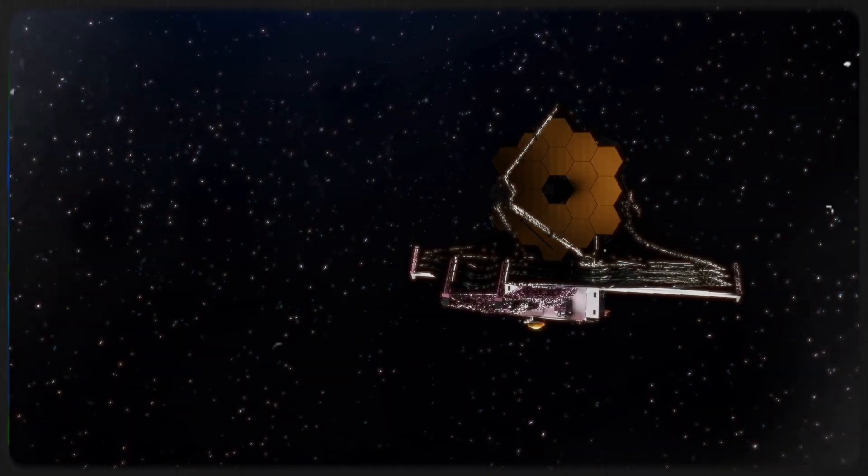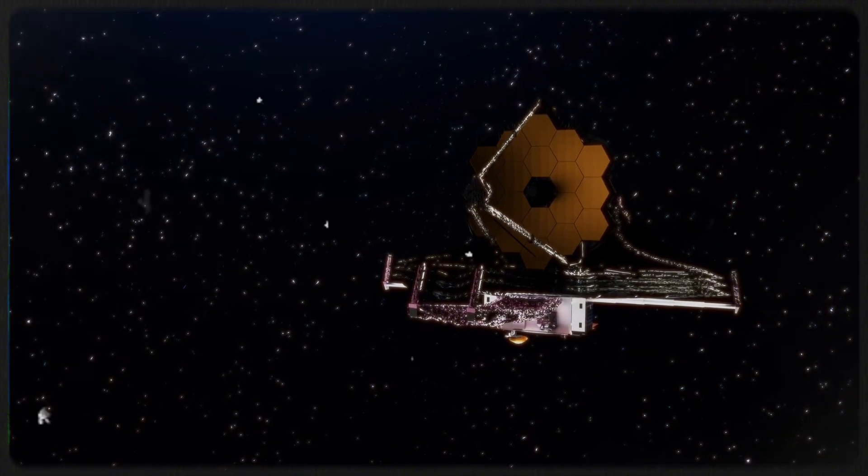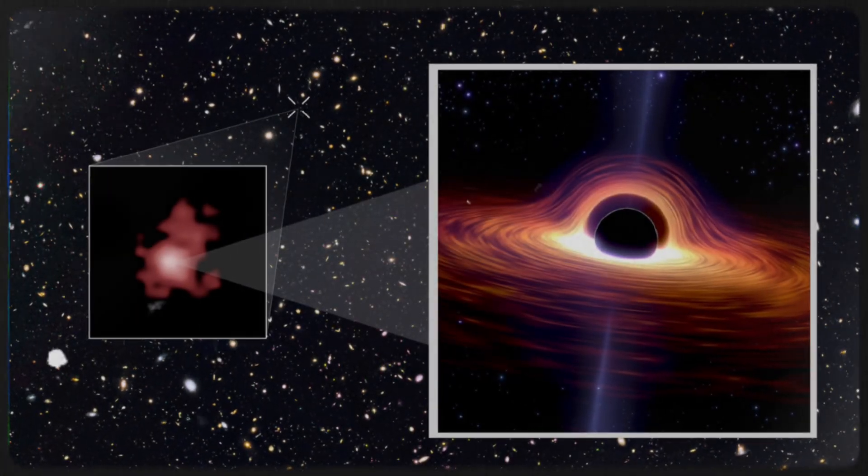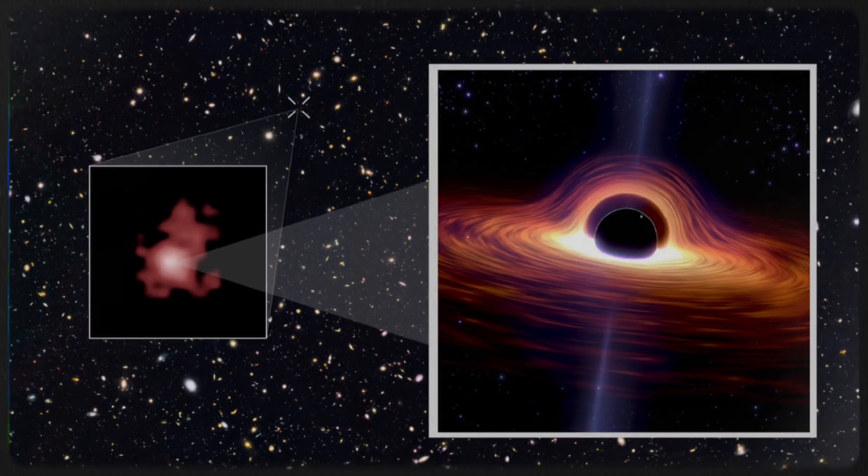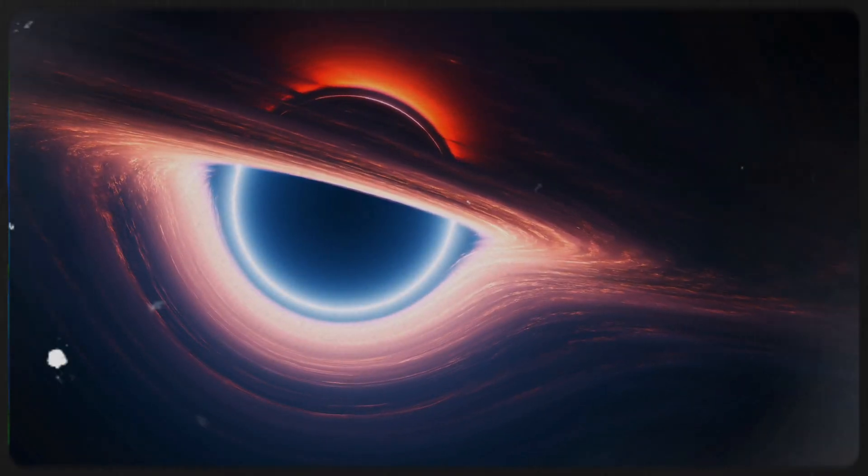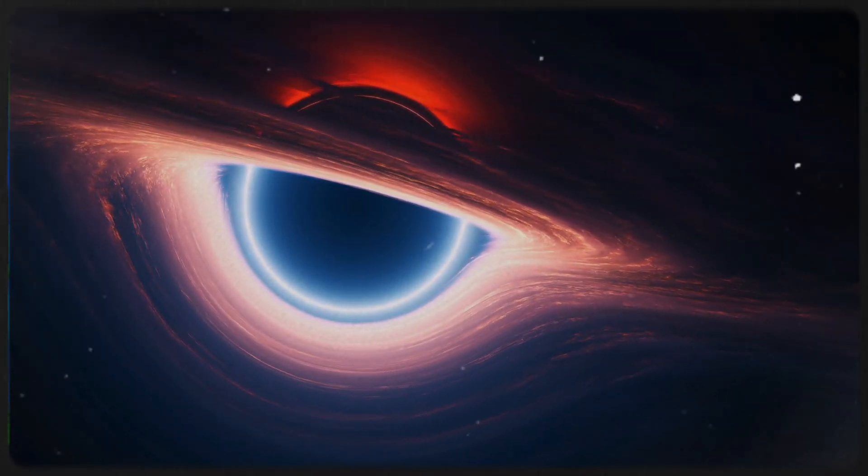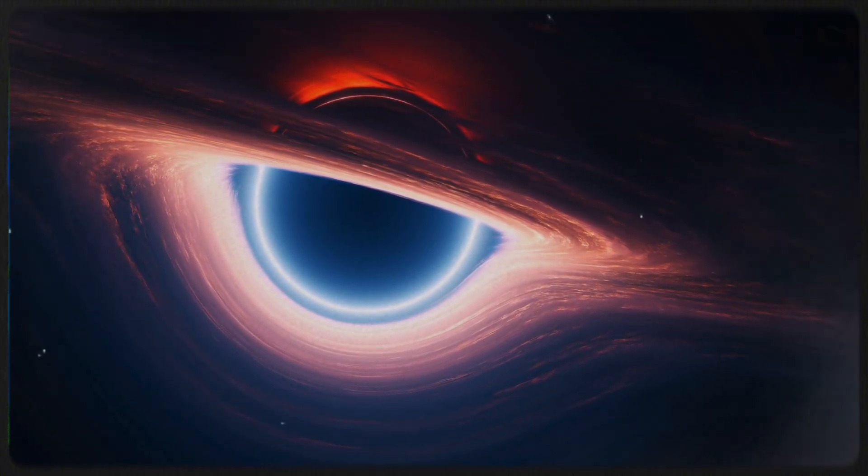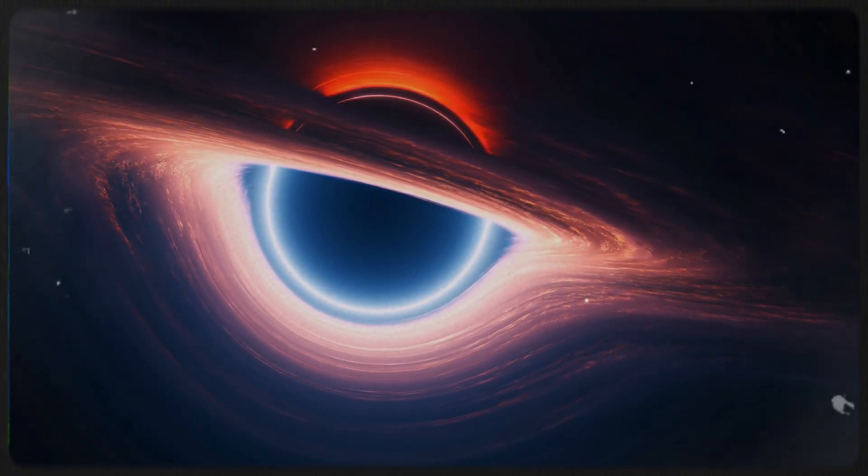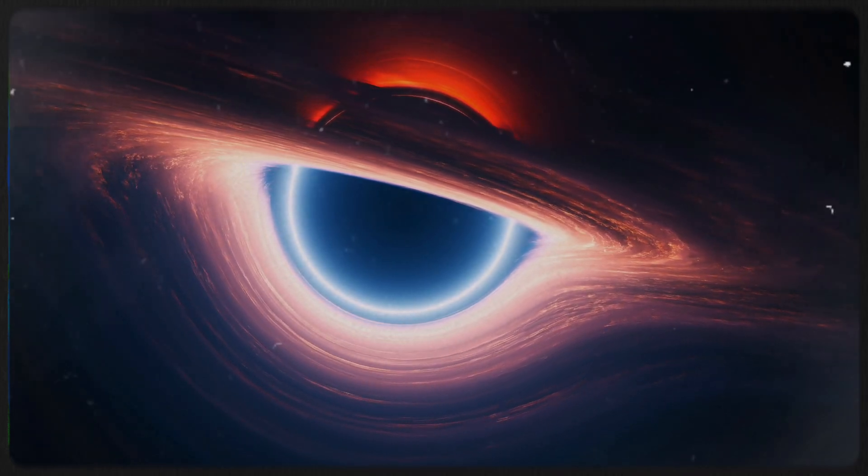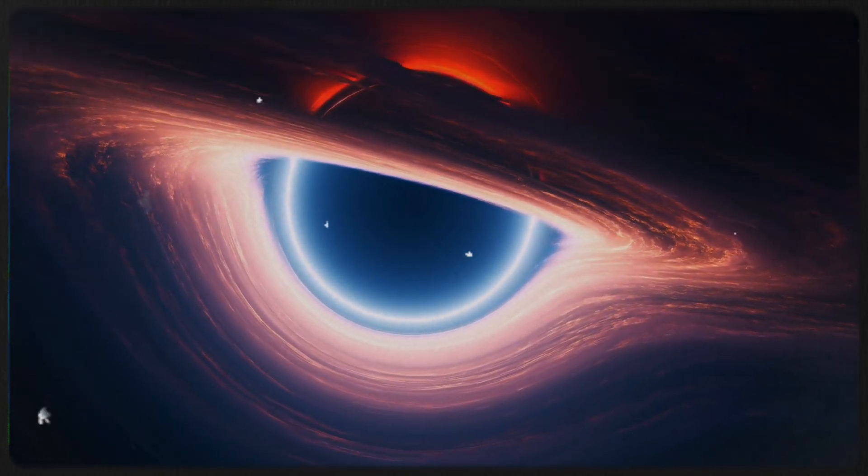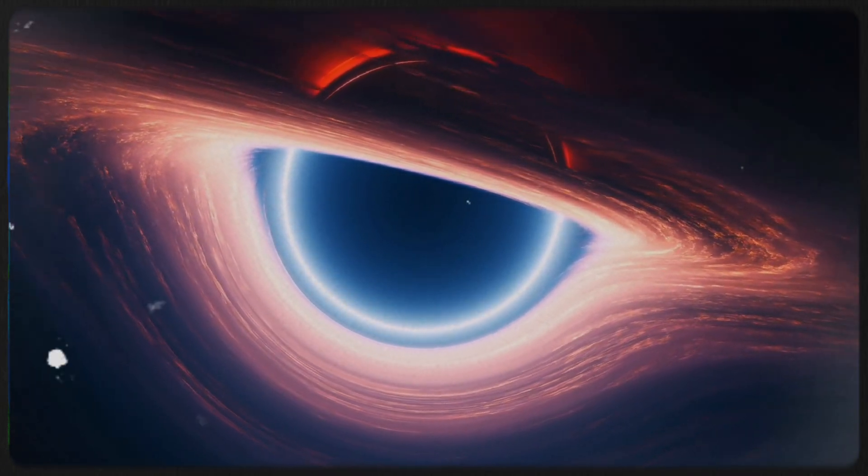The James Webb Space Telescope has identified what might be the oldest black hole in the universe, located at the center of a young galaxy just 570 million years after the Big Bang. This supermassive black hole, 10 million times the mass of the Sun, was detected thanks to Webb's advanced cameras, which can peer back to the cosmic dawn starting about 100 million years post-Big Bang.